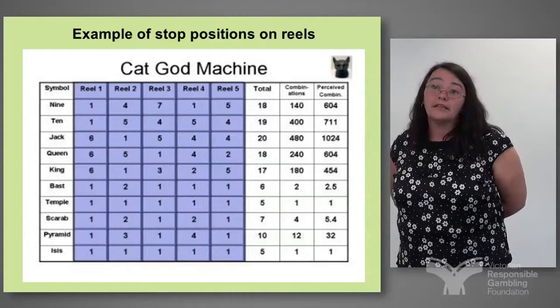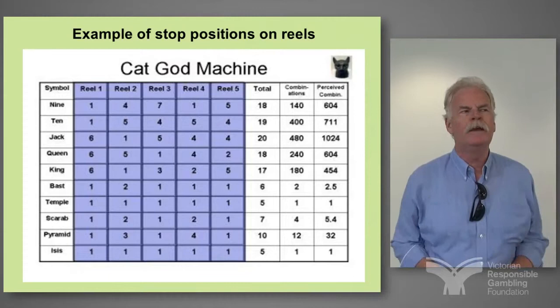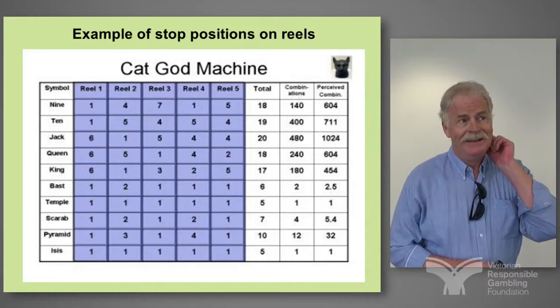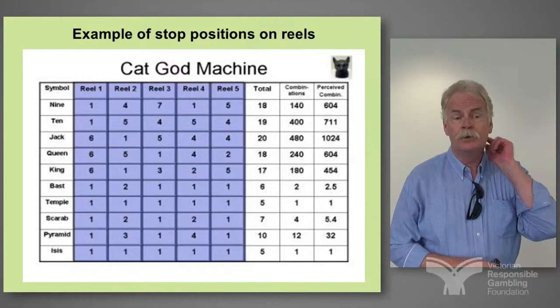There are some interesting terms used in the way these reels are stacked. For example, if there are 7 nines on a reel, that's called 'puffing'. If there's only 1 nine — for example on reels 1 and 4 — that's called 'starving'.